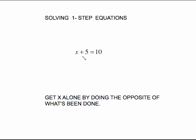To do this, we're going to work our way backwards. We're going to undo what they did. So our bottom line, our rule for solving equations is this: you want to get x alone by doing the opposite of what's been done to it.